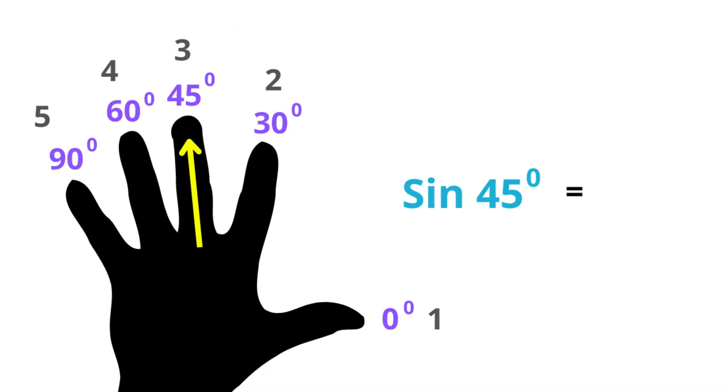Let's go for the last example. Sine of 45 degrees. So 2 fingers to this side. Now take the square root and divide it by 2.